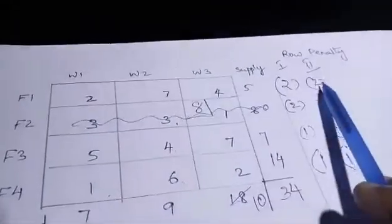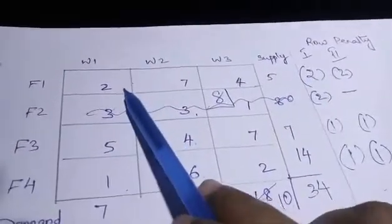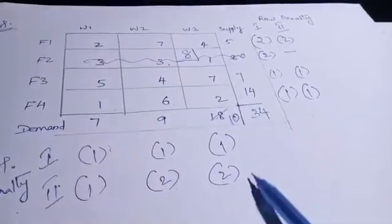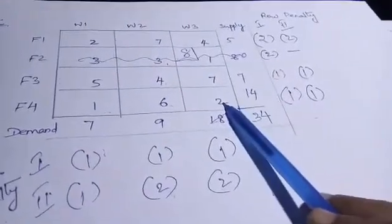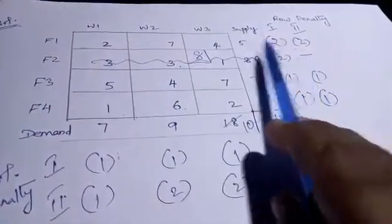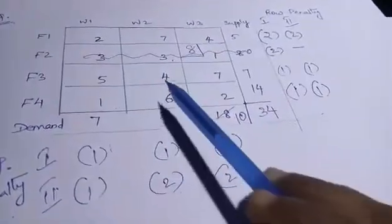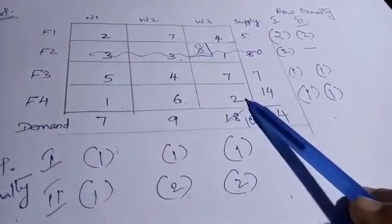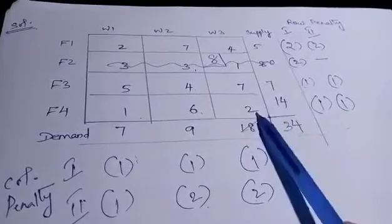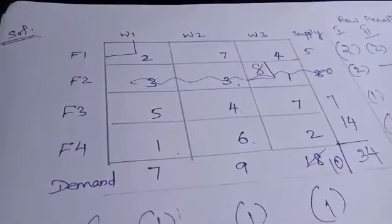The maximum value is 2. We find the minimum cost in that row or column, which is 2. We allocate accordingly, taking the minimum of supply and demand. We write 2 in that cell and update the table for the next iteration.